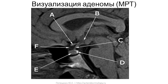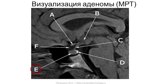Now let's take a closer look at the area of the Turkish saddle. The letter A stands for the chiasm or optic nerve cross. The letter B stands for the hypothalamus. The letter C stands for the pituitary peduncle, which connects the pituitary gland and hypothalamus. The letter D stands for the neurohypophysis — note that it is always lighter than the adenohypophysis due to the accumulation of vasopressin in it.